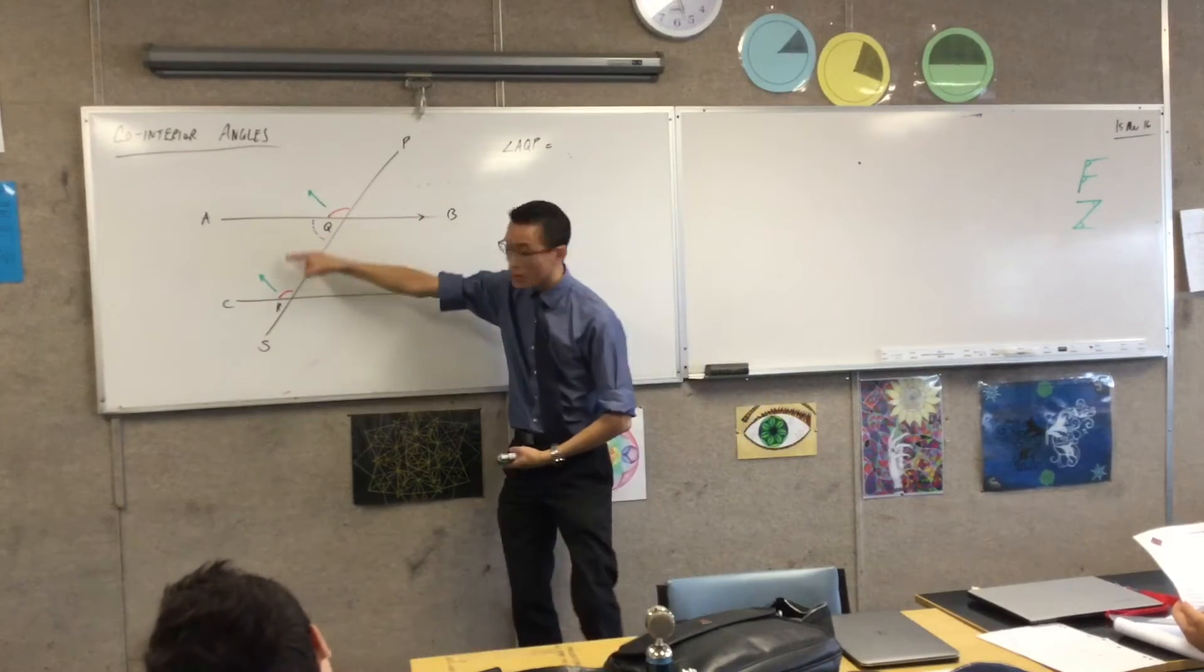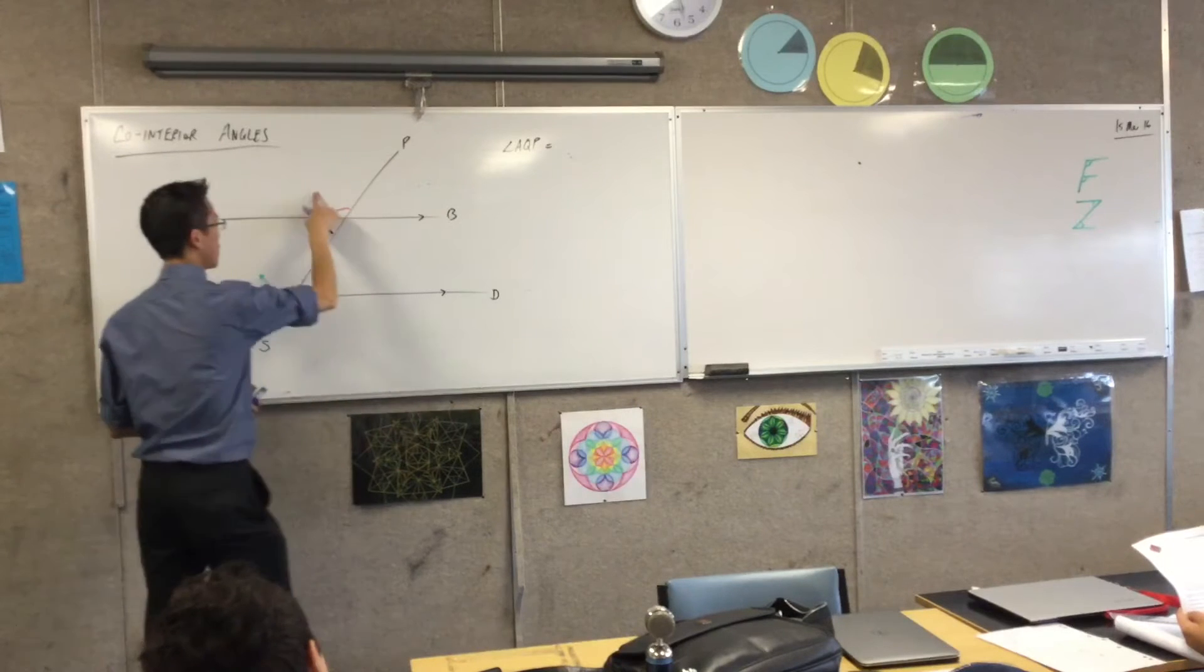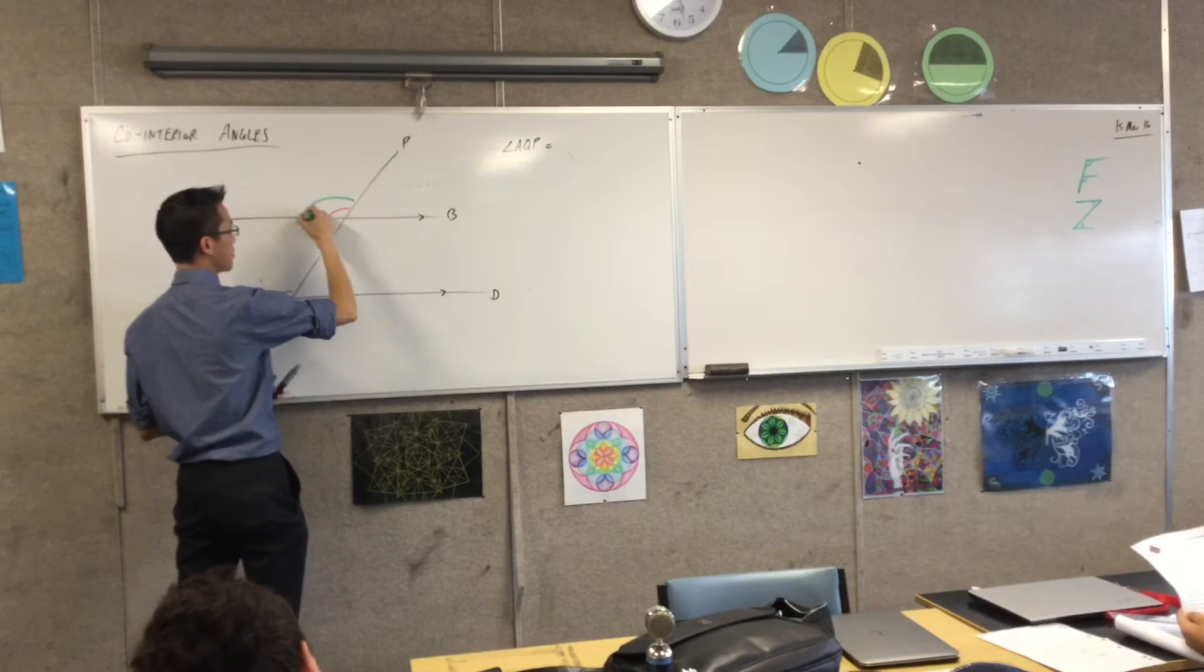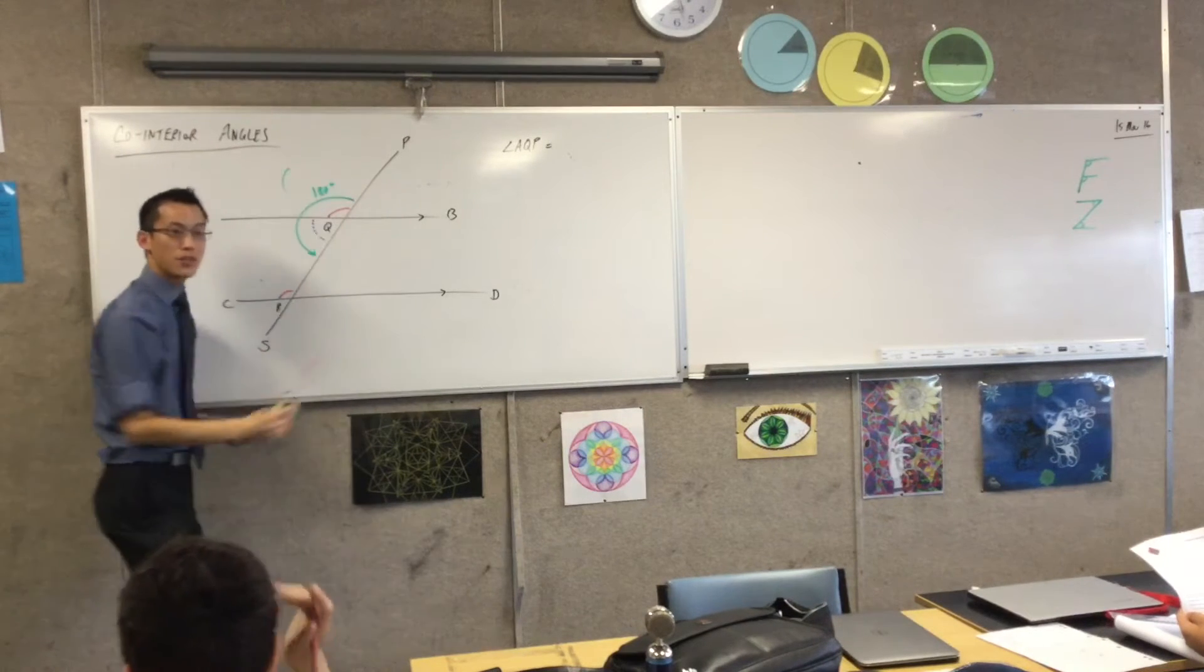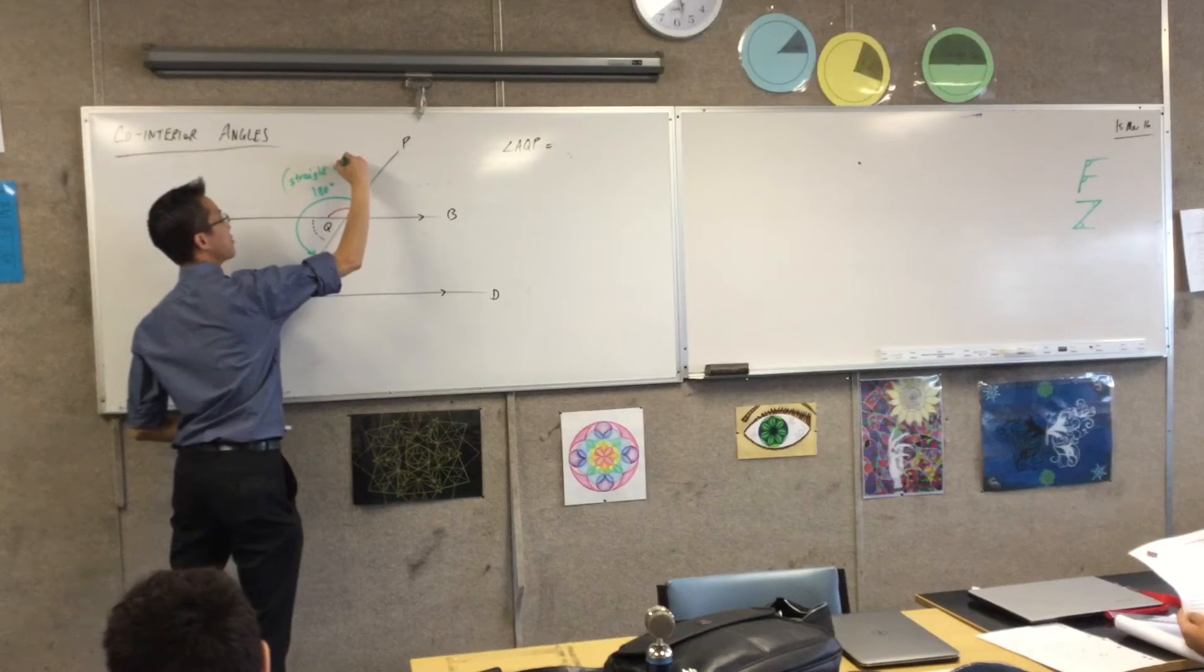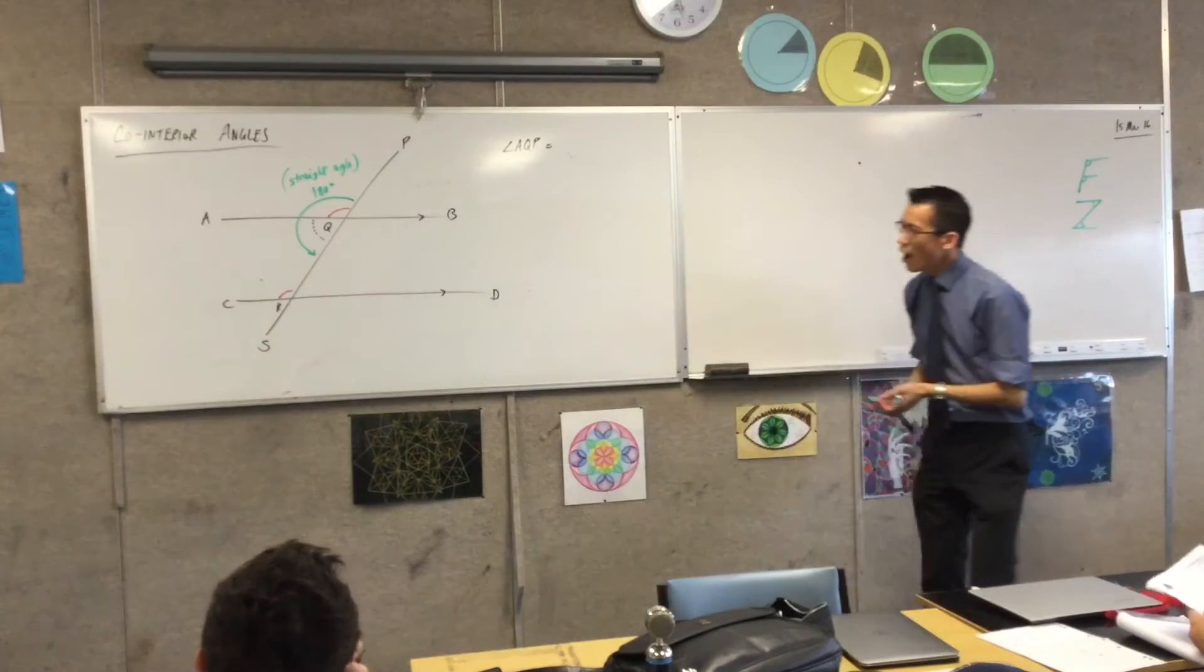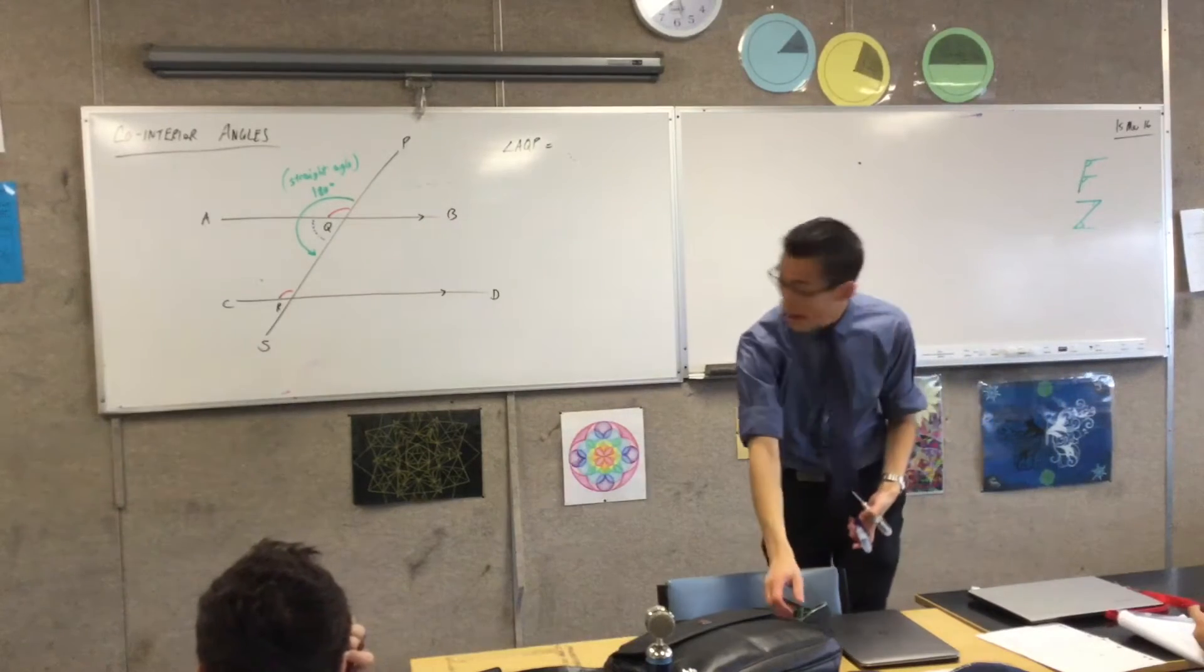Okay, this whole angle here, in fact, I'd love you to mark this in with me. We'll use this here. This whole angle all the way is 180 degrees. I suppose, if you like, you can also say why. It's because it's a straight angle. It's half of a revolution.